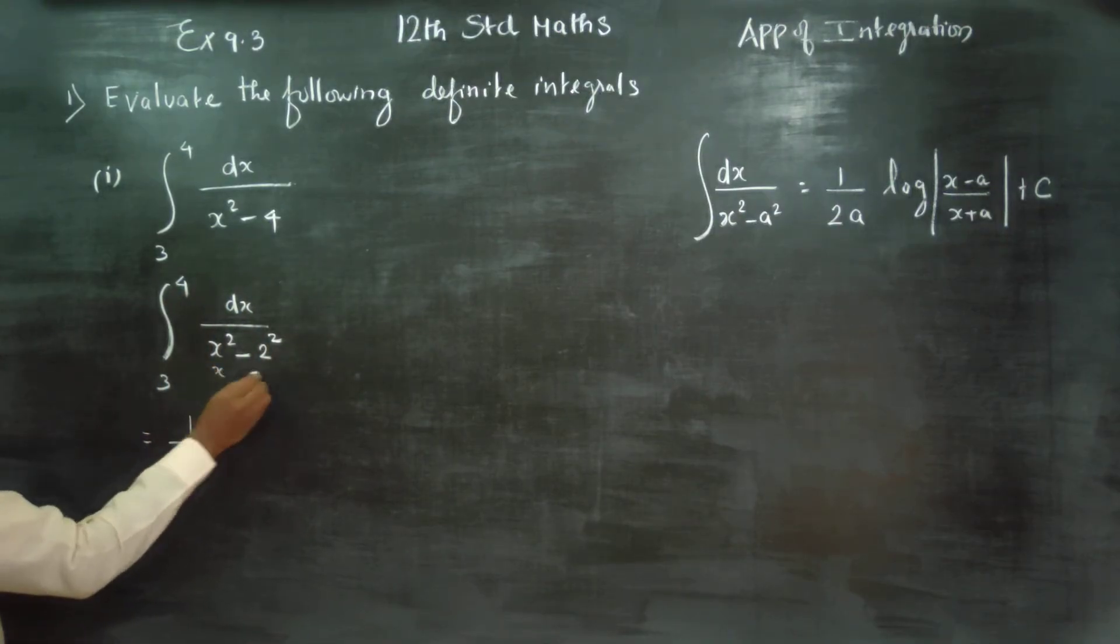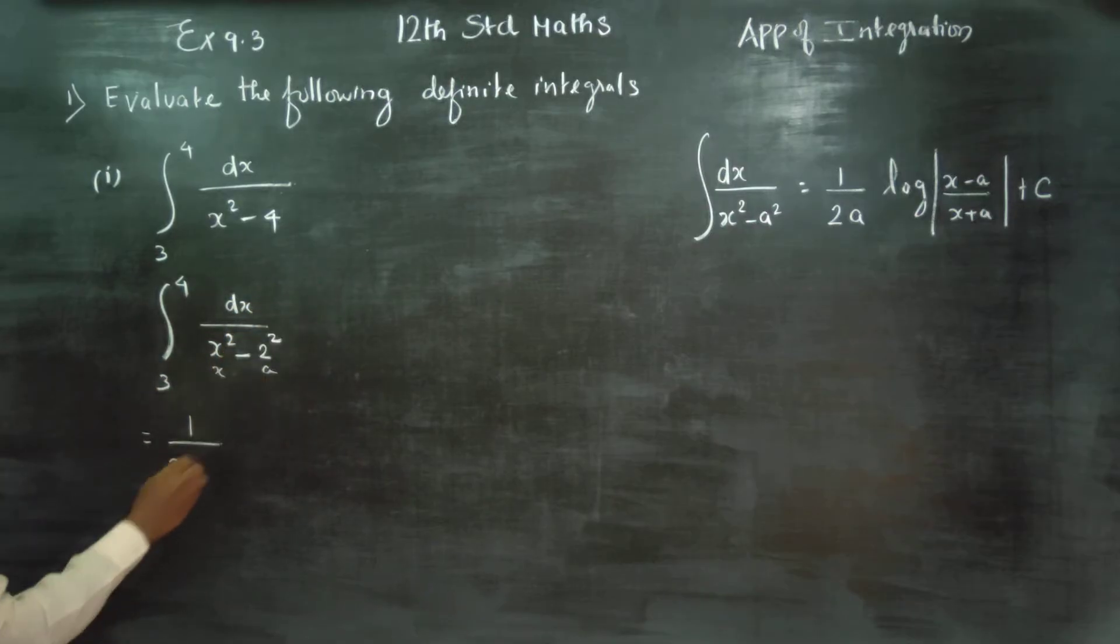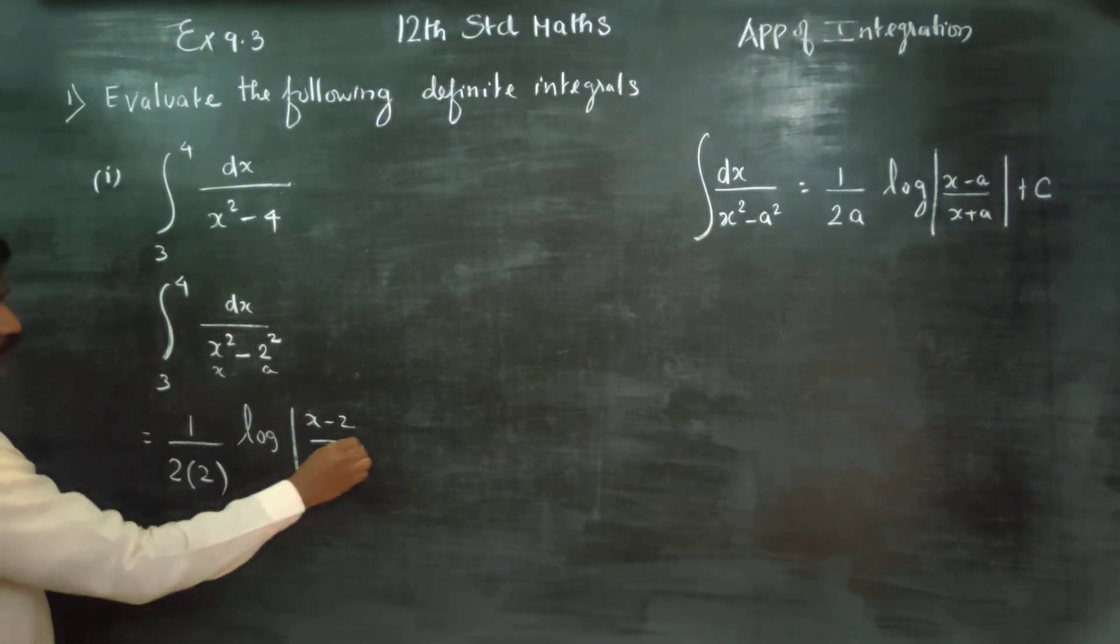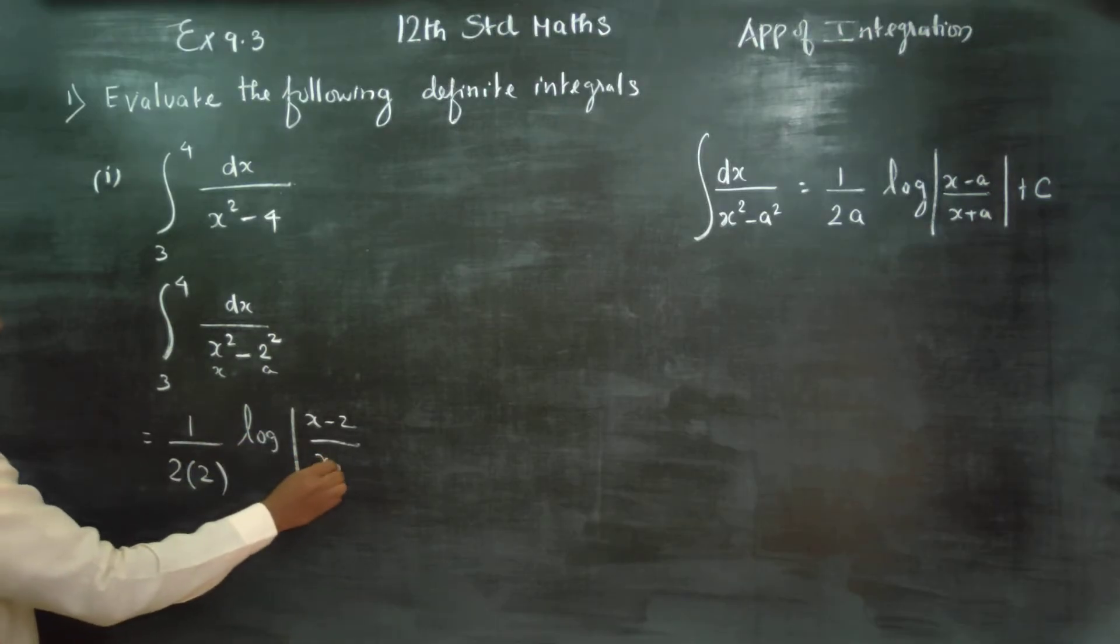This is my x and this is my a. 1 by 2a, 1 by 2a logarithm of x minus a, x minus 2 by x plus 2, plus c.